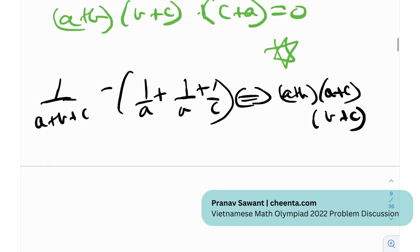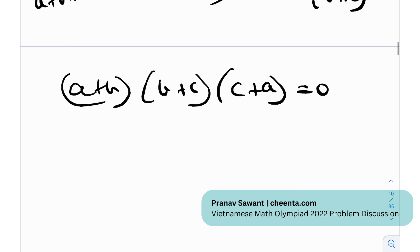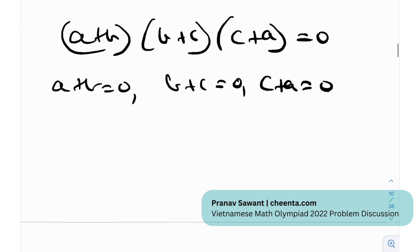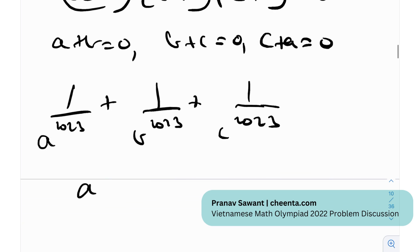But coming back onto the problem, so we have this statement over here that (a+b)(b+c)(c+a) equals 0. So here you can essentially divide it into three cases so that a+b equals 0 or b+c equals 0 or c+a equals 0 or a combination of these might be 0. Anything is possible. And what we need to find, we need to find the value of 1/a^223 plus 1/b^223 plus 1/c^223 given that a+b+c is 2022. Sorry, 22. So no matter which two of these are 0, any two of these, it does not matter.